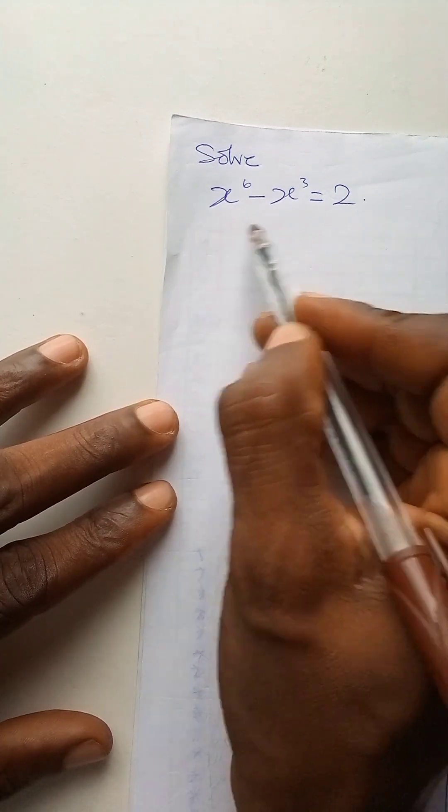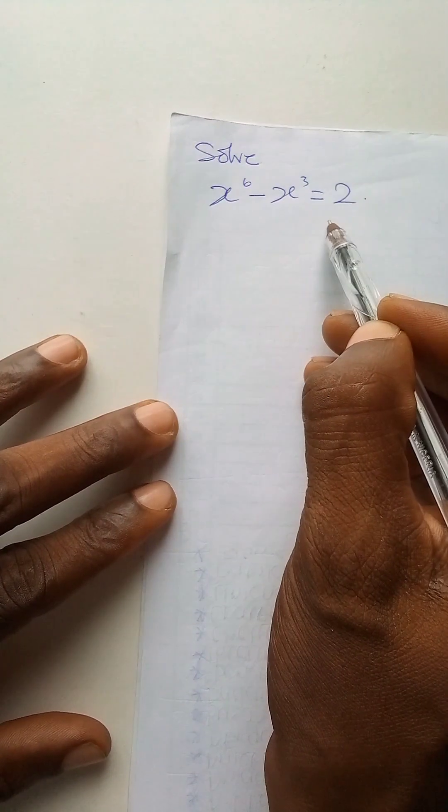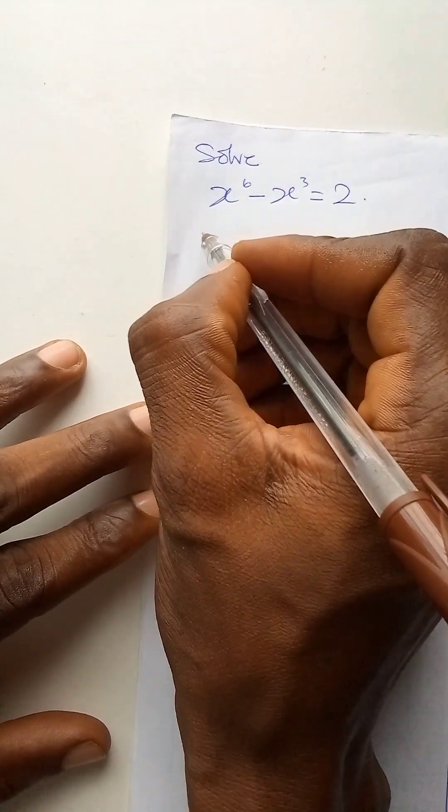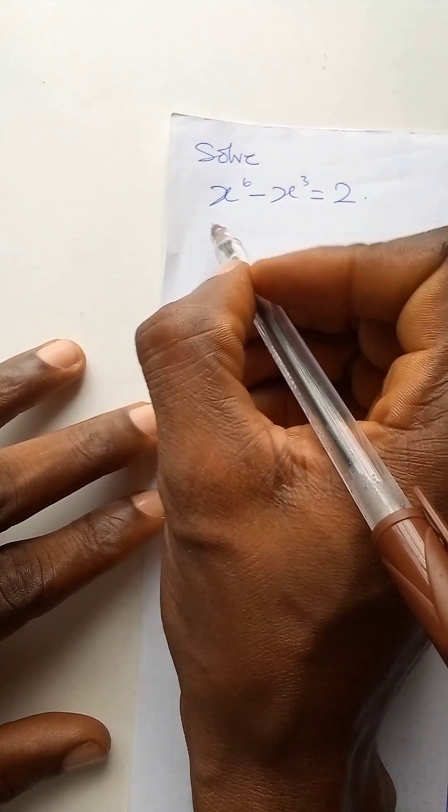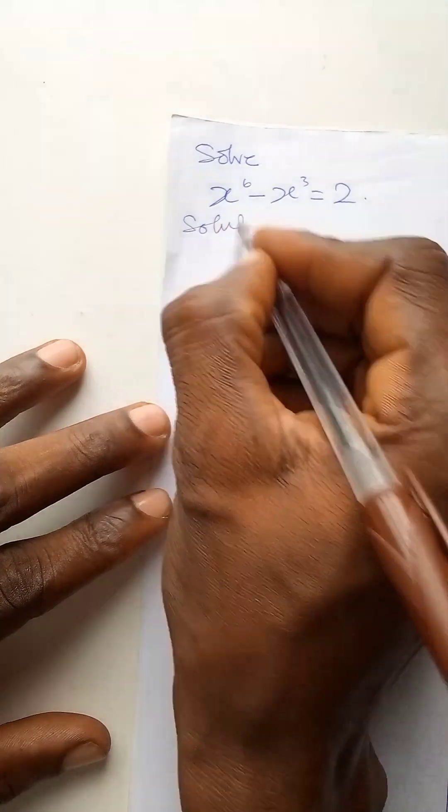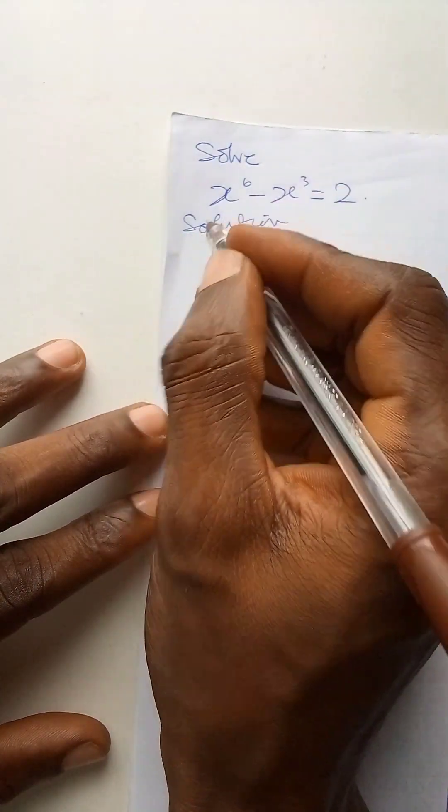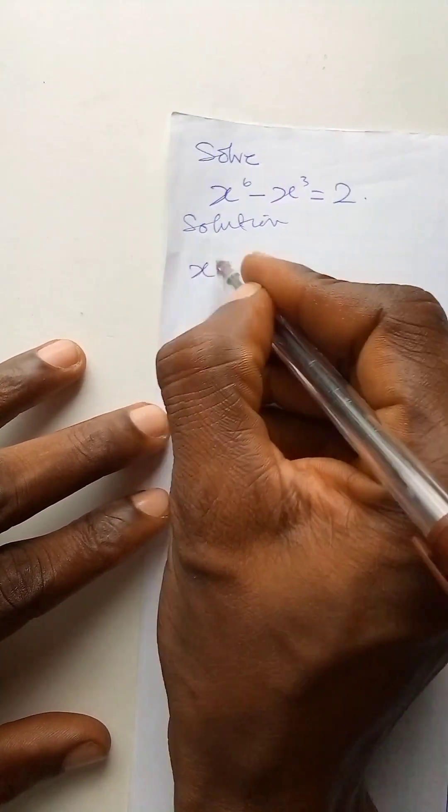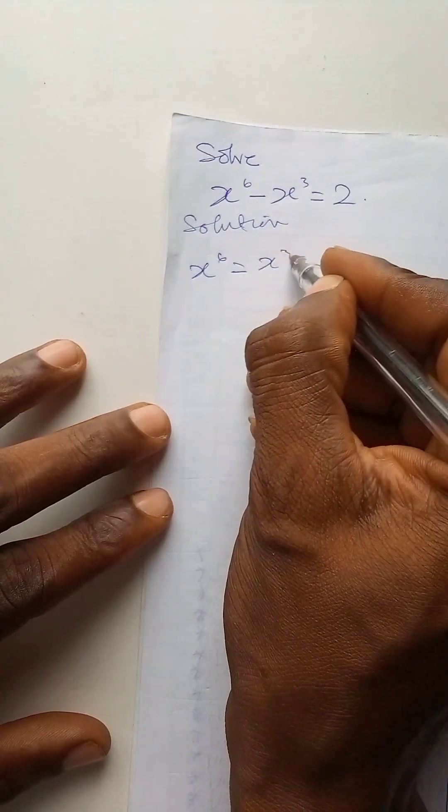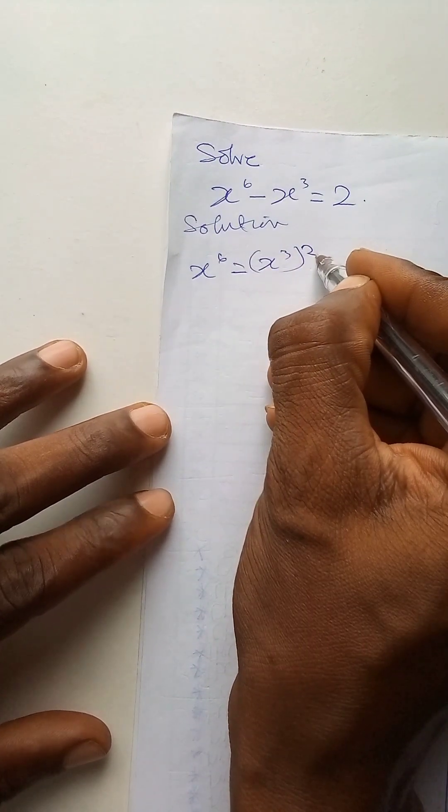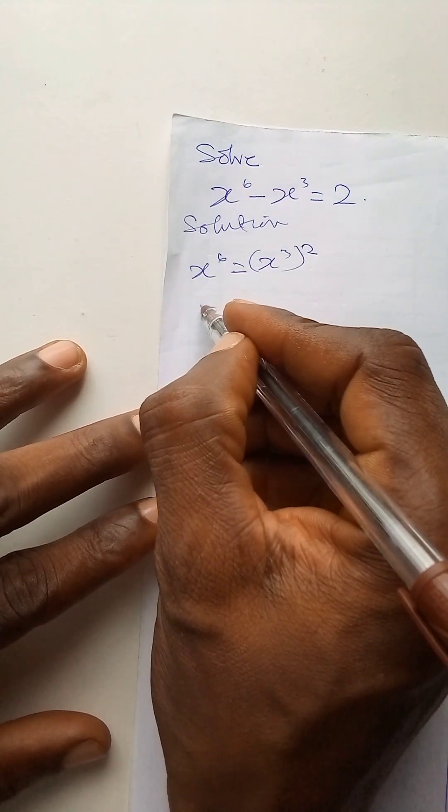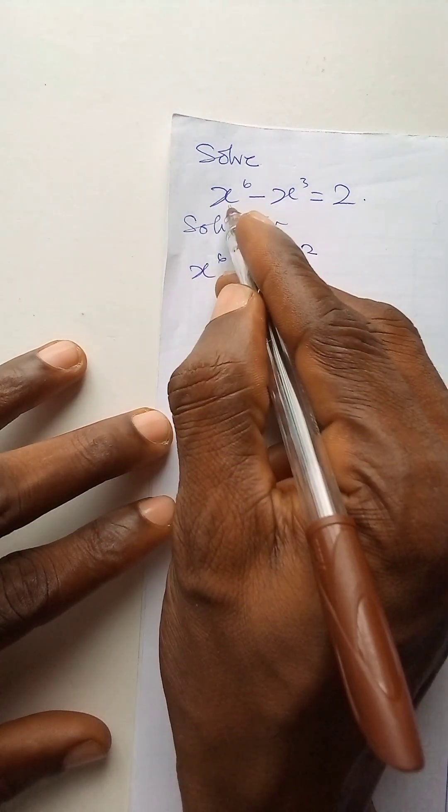There is a hidden quadratic in this expression but for us to find it out we need to simplify. How do we go about simplifying? Now x raised to power 6 is also x raised to power 3 bracket 2. And we will now use this instead of this.